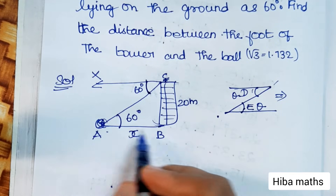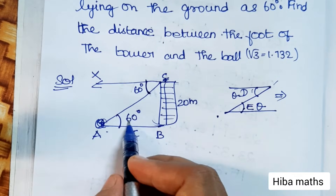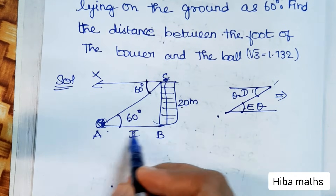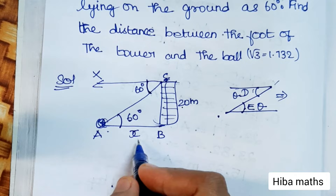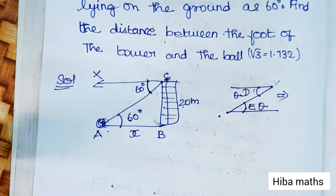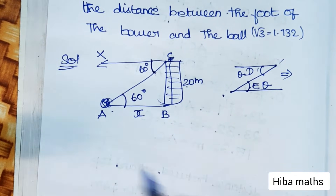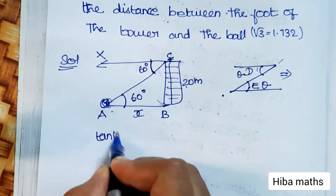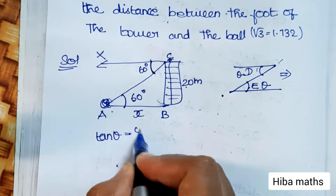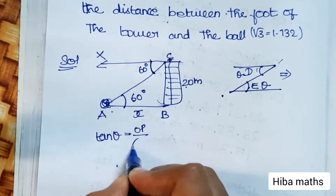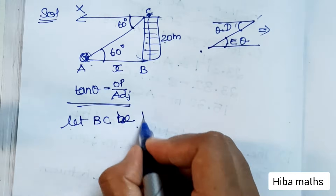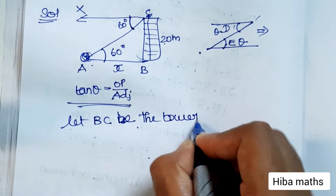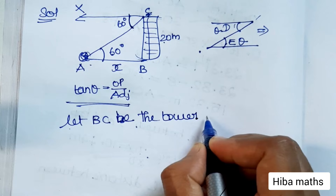This is easy. The opposite side and the adjacent side — opposite to adjacent gives us tan theta. We use opposite divided by adjacent. Let BC be the tower of height.